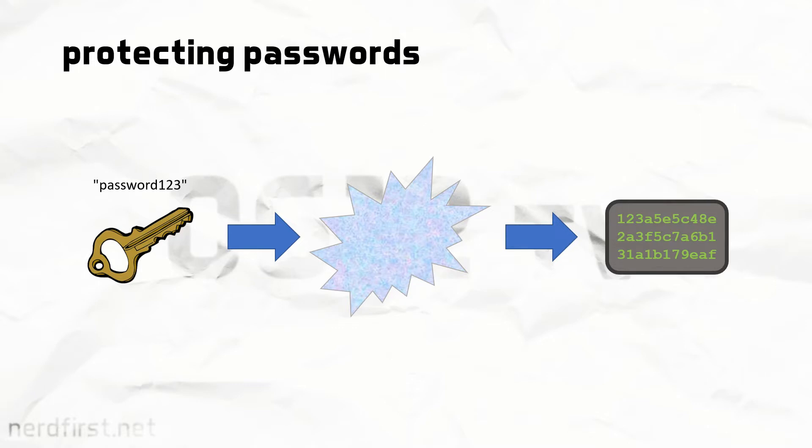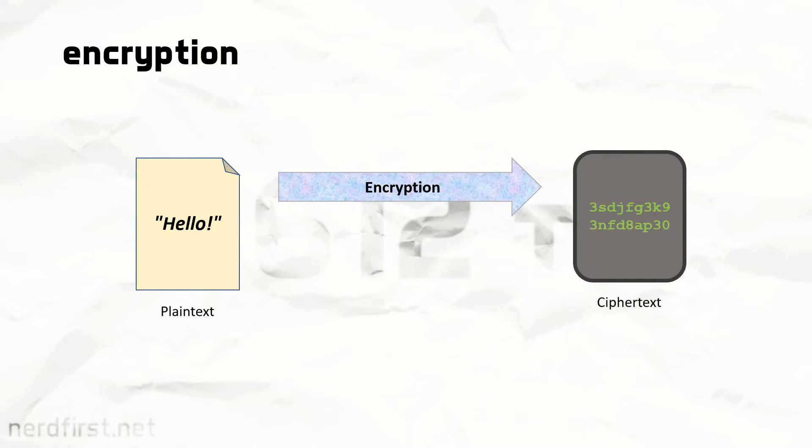People sometimes mistakenly call this encryption, but this isn't actually encryption. You see, encryption refers to taking something, which we'll call plain text, and by putting it through an algorithm, generate what is essentially a garbled mess, called ciphertext. The ciphertext looks like nothing meaningful to the naked eye, but if you enter the correct key or password, you are able to decrypt it back to the original plain text. This is encryption, and this is not what is done for passwords.